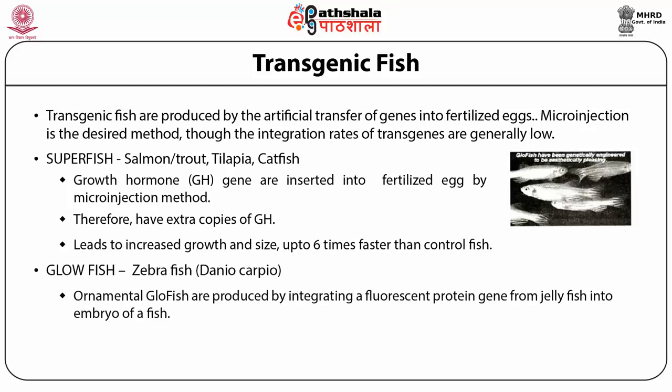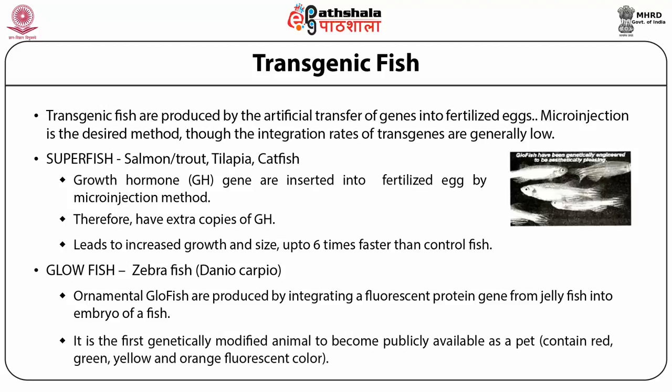Transgenic fish include Superfish and GloFish. Superfish — like salmon, trout and catfish — have the growth hormone gene inserted into fertilized eggs by microinjection, giving them an extra copy of growth hormone and growth up to six times faster than control fish. GloFish, for example zebrafish, are ornamental fish produced by integrating a fluorescent protein gene from jellyfish into fish embryos. It is the first genetically modified animal to become publicly available as a pet, containing red, green, yellow and orange fluorescent colors.